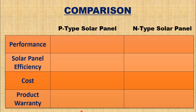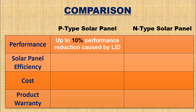Now let's discuss the differences one by one. The major difference lies in performance. P-type solar panels have performance reduction up to 10% due to light-induced degradation, as discussed earlier, whereas N-type solar panels have no performance degradation.